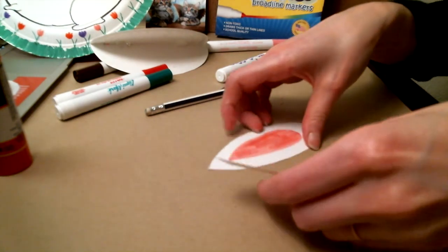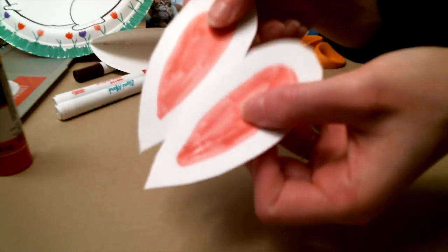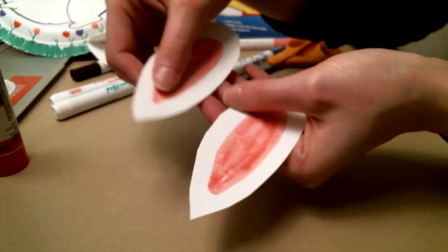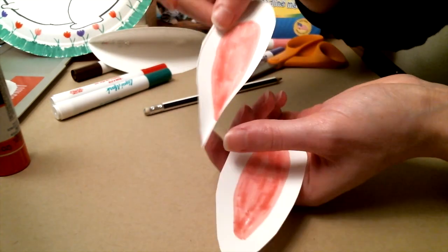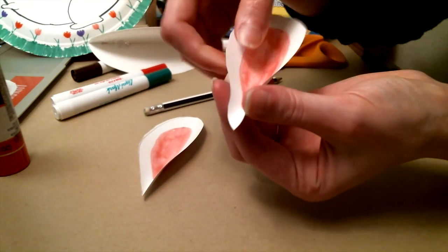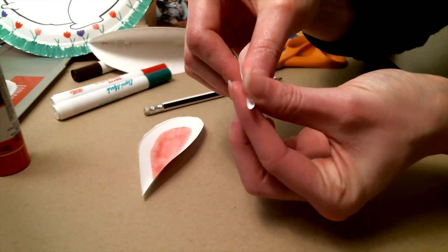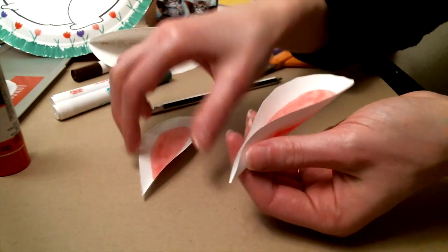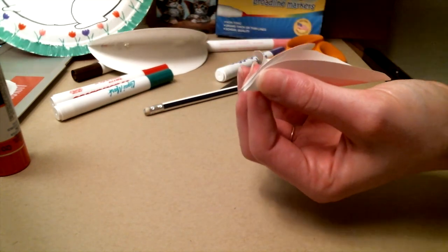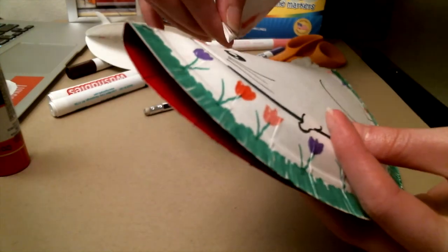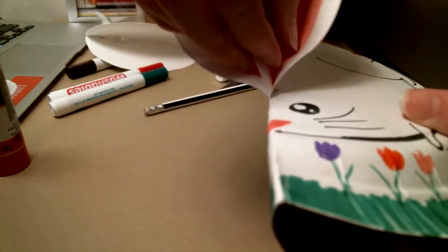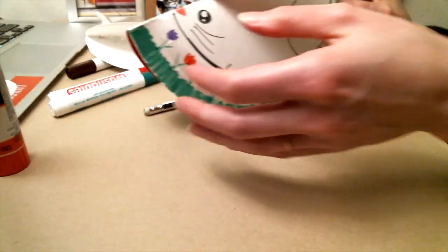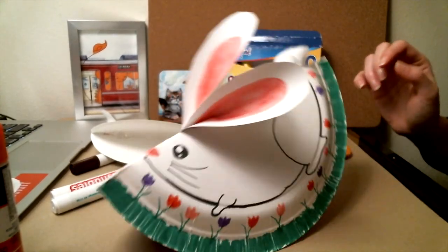And then we have two ears. Take this one, pinch it like this, do the same thing to this one, and then take both of them, take it to your bunny, and put them in the hole here. And now, ta-da! We have our rabbit, yay!